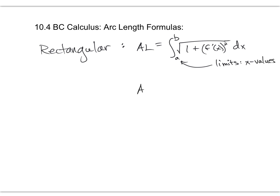And then we had parametric. What was that formula? It's very similar. Is it a to b, or alpha to beta? Alpha to beta is going to be our next one — the one we're doing today. It was a to b. And what are the a and b this time? They're t values for the parameter. So the limits this time are t values.